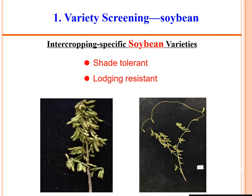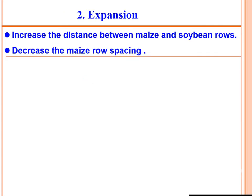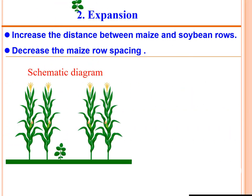After developing intercropping-specific maize varieties, we developed intercropping-specific soybean varieties. In intercropping systems, soybeans suffer from heavy shading from maize, which increases plant height and lodging, ultimately reducing soybean yield. Our breeders developed a shade-tolerant and lodging-resistant soybean variety. Field pictures show one plant with a strong stem and many pods compared to a lodged plant with very few pods.